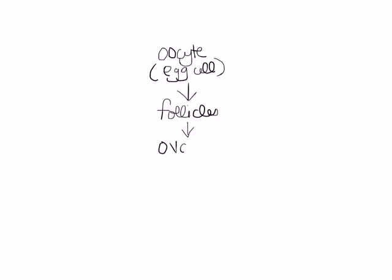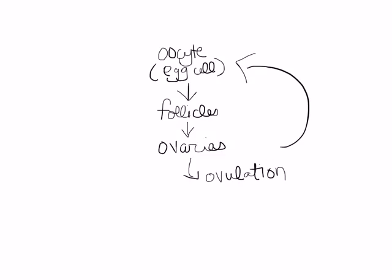Although in this case, the follicles are inside the ovaries, whereas the sperm mature in the epididymis outside of the testes. The oocyte releases from the ovary in a process called ovulation, which happens on a monthly basis, approximately every 28 days. As soon as one is released, the process begins of a new one maturing in the follicles. This whole process of oocyte maturation and ovulation is called the ovarian cycle.